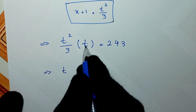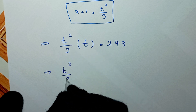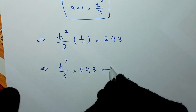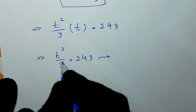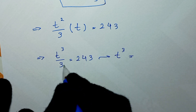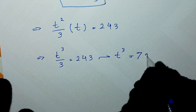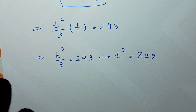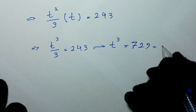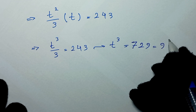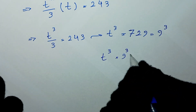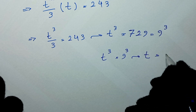So t cubed over 3 equals 243, and multiplying both sides by 3 gives t cubed equal to 729, which is 9 to the power of 3. From here, t is equal to 9.